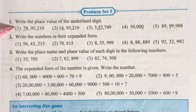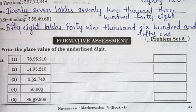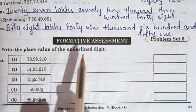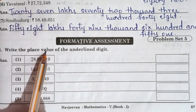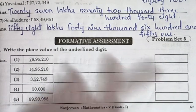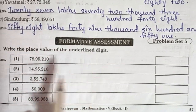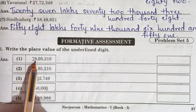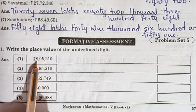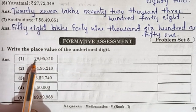Let us start with question number 1. It is in your combined book on page number 57 — formative assessment, problem set 5. Question number 1: write the place value of the underlined digit. In the first number, 78,95,210, the digit 7 is underlined.